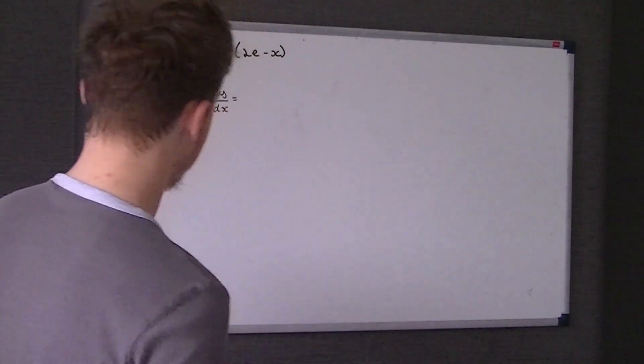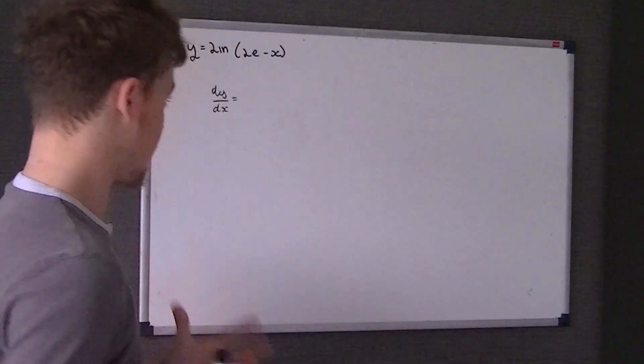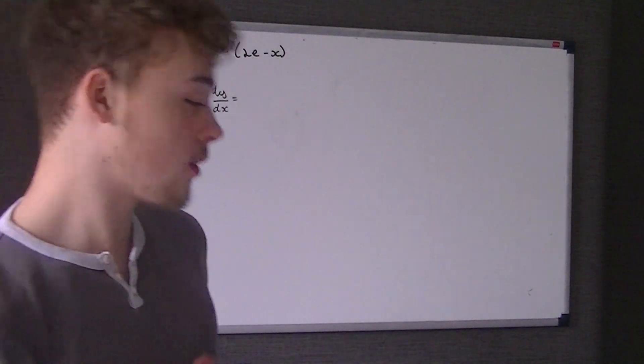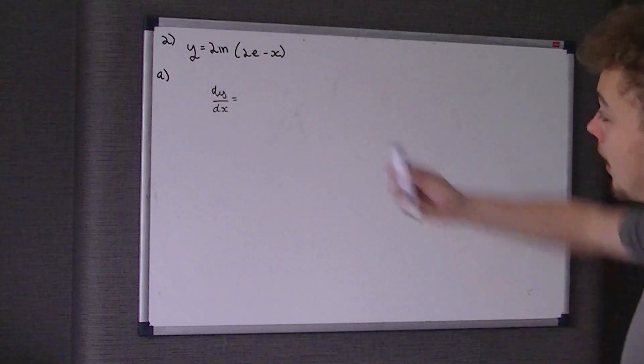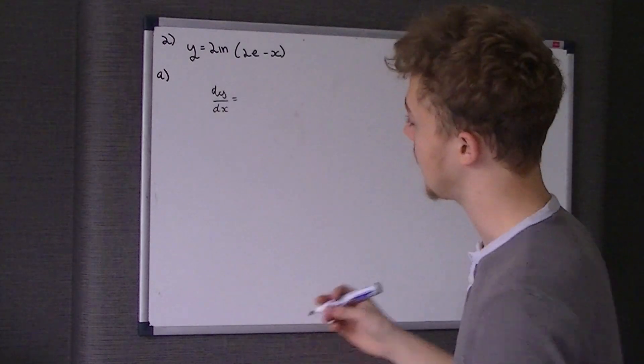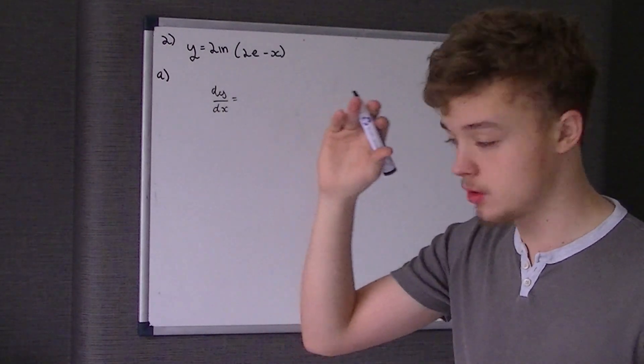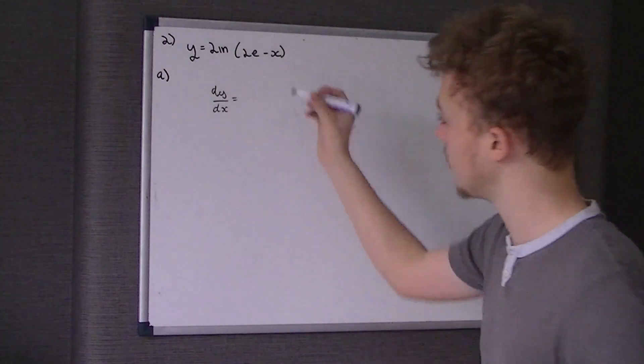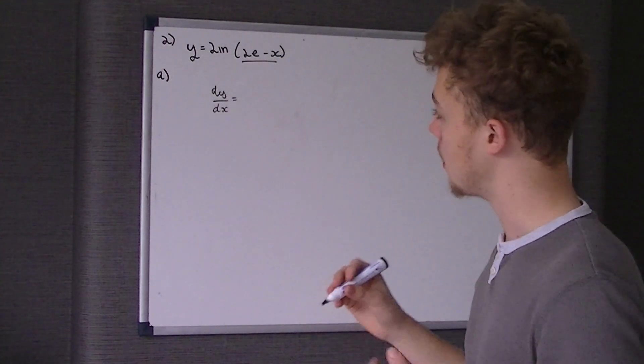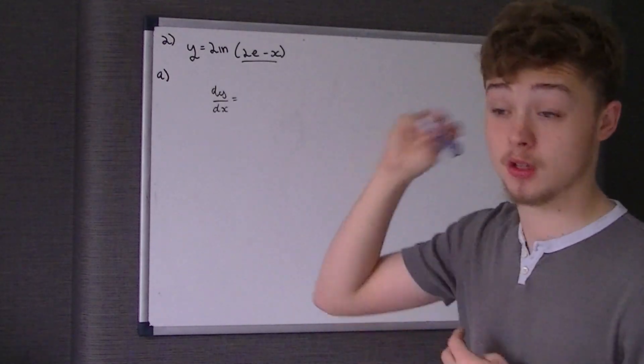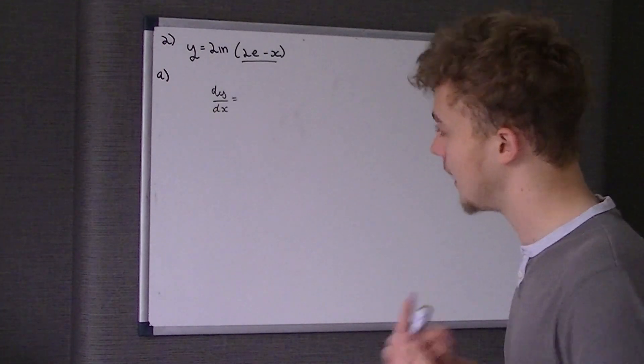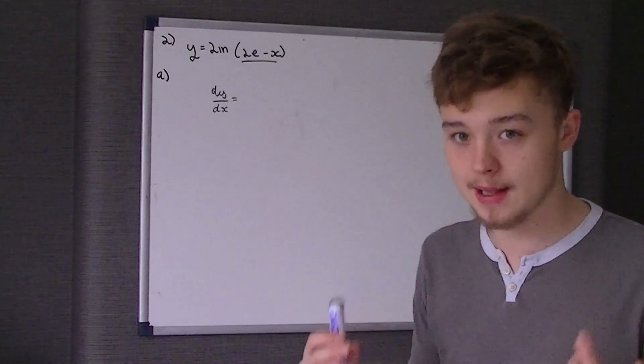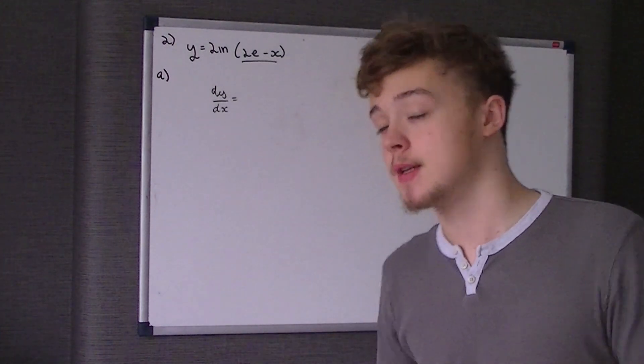We're given the equation of a curve, y equals 2 ln of 2e take x, and we're told to differentiate that. Now you've got to remember our differentiating ln rules. When we were differentiating lns, we had the differential that went on the top and then what was being ln.